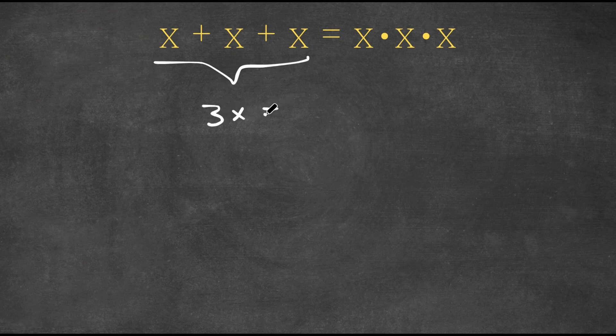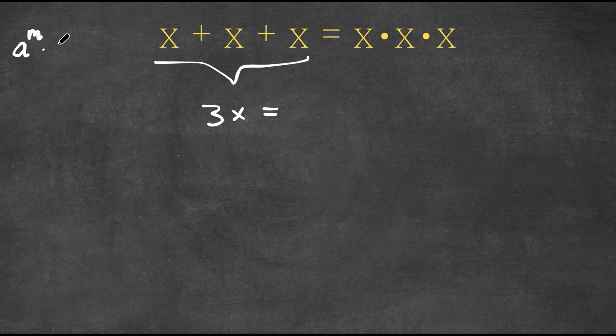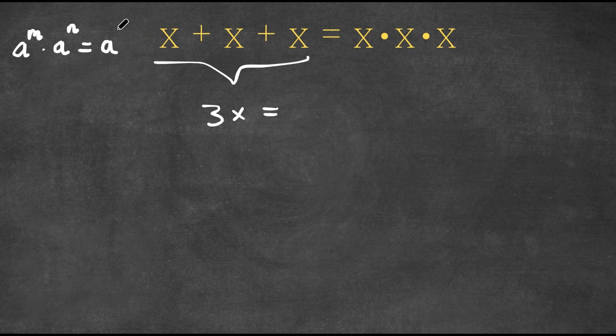Is equal to, now x times x, well if we have something in the form a to the power of m times a to the power of n, this is equal to a to the power of m plus n. So we have x to the power of 1. All of these degrees are 1.